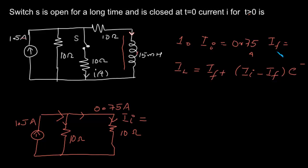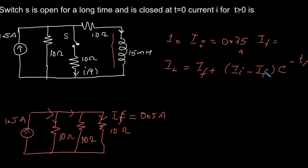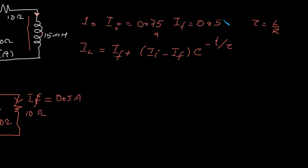i_final is the steady state current after the switch is closed. Once the switch is closed, we have another 10 ohm resistor added. Once again the inductor acts as a short circuit, so the current gets equally divided across three 10 ohm resistors. Therefore, i_final equals 1.5 amperes divided by 3, which is 0.5 amps.